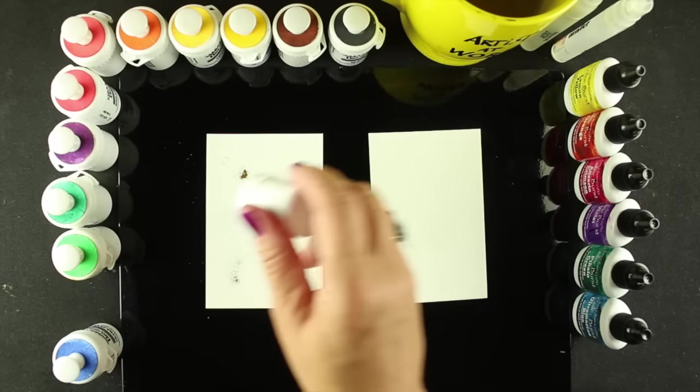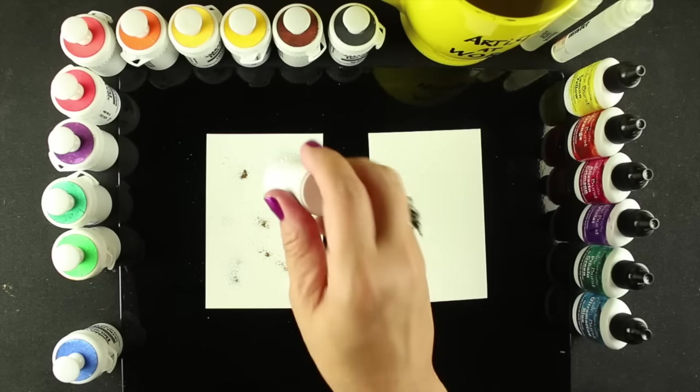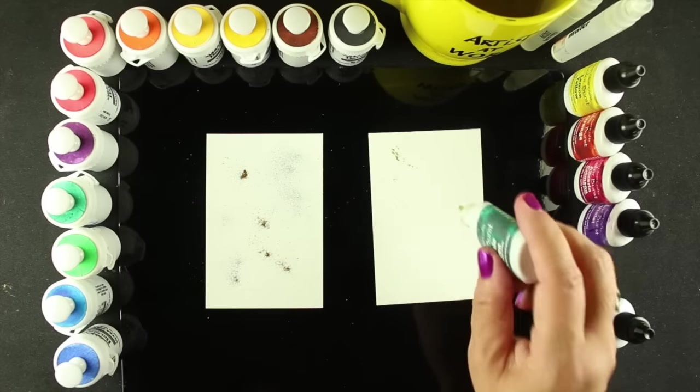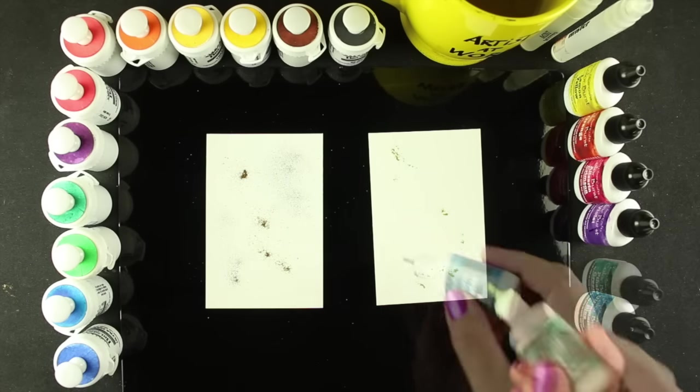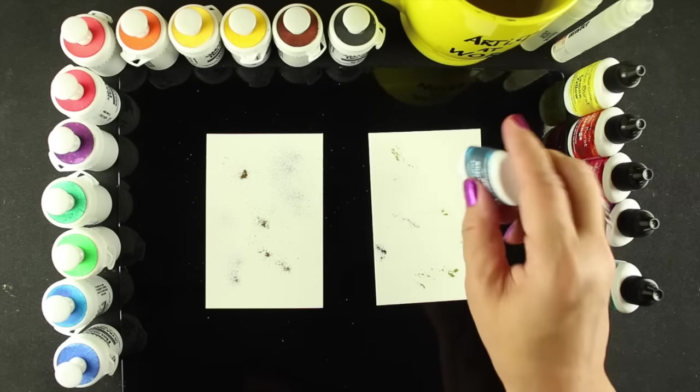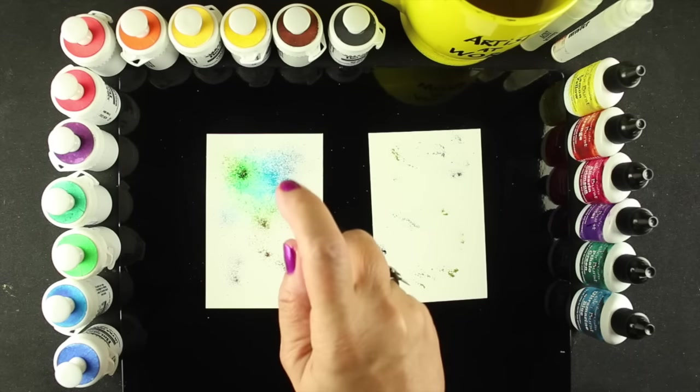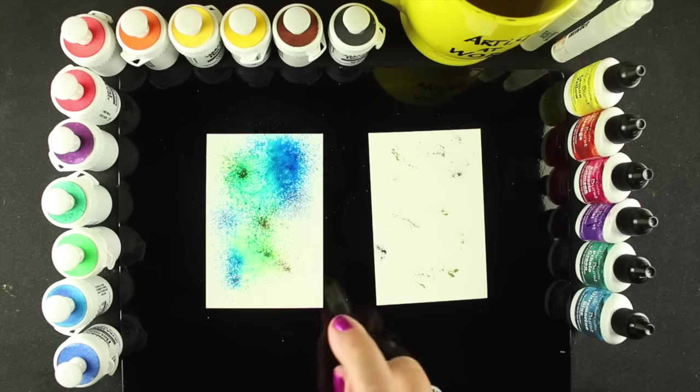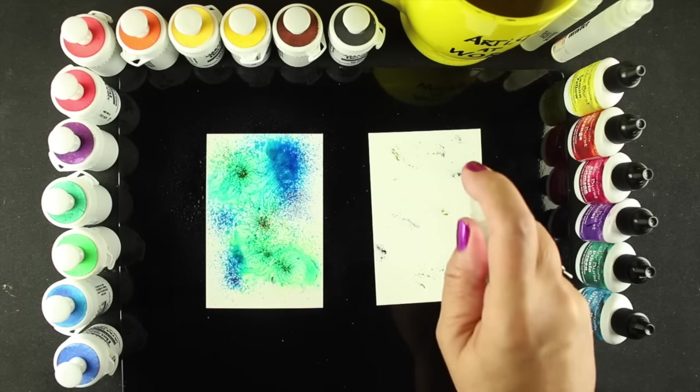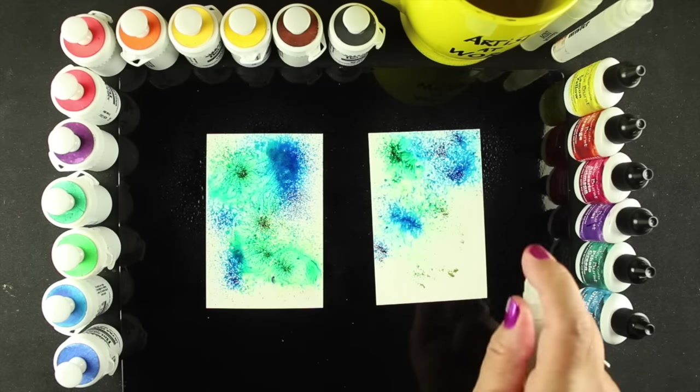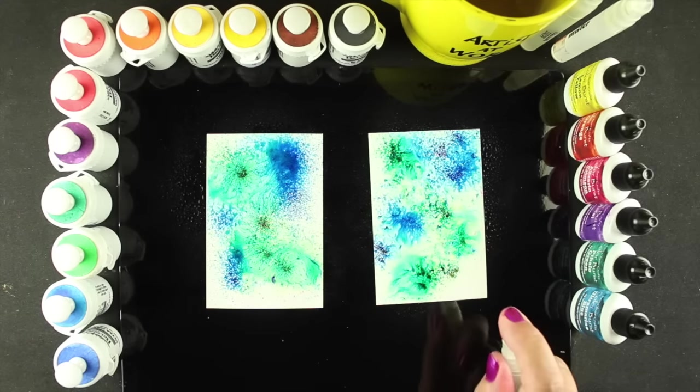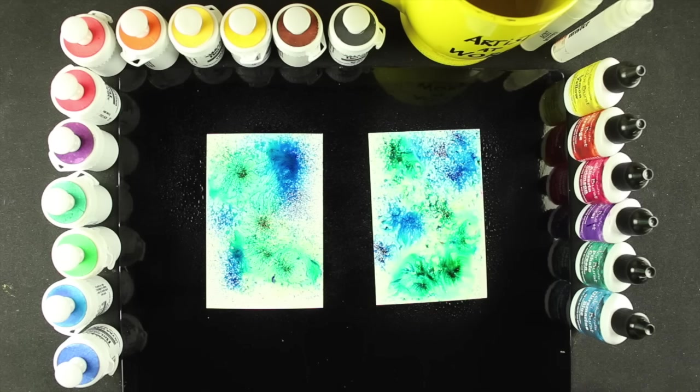You can start with dry paper. This is watercolor cardstock, and this is the Canson XL. There will be links to all this, by the way, in the doobly-doo. And I'm just sprinkling on some colors, and I'm trying to keep the colors about the same between the two so that we get some semi-direct comparisons. And I'm just spritzing water on them. And you can see how the color just moves like mad as soon as you hit them with water.